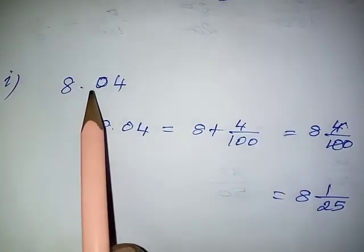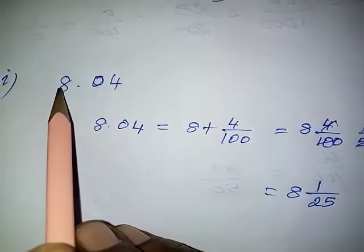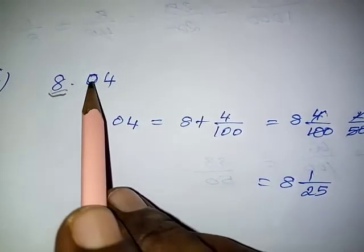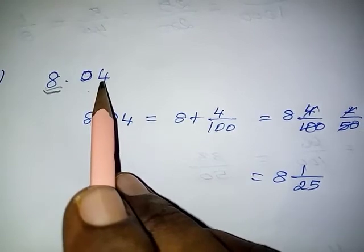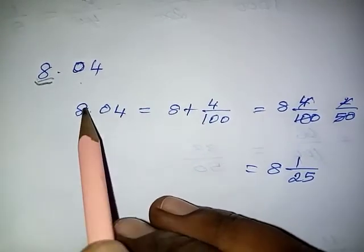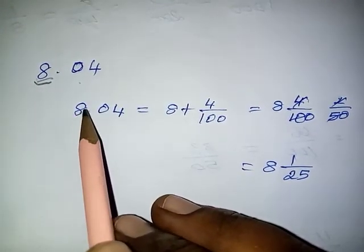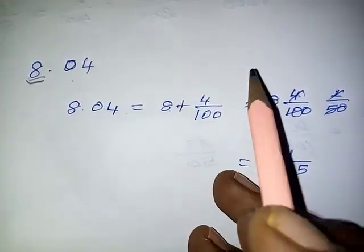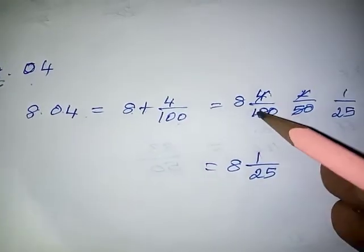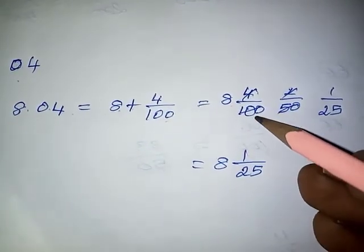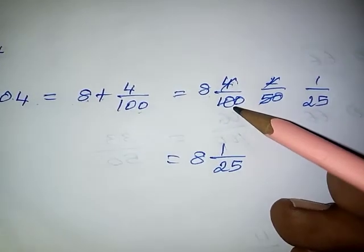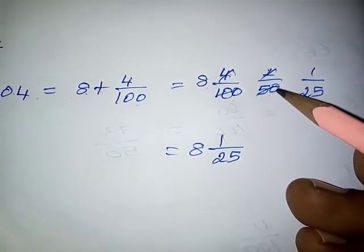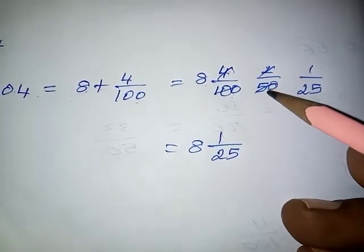Next: 8.04. In this sum, the integral part is 8 and the decimal part — the 10th value is 0, then the 100th value is 4. So the given decimal 8.04 equals 8 plus 4 by 100, giving the fraction 8 and 4 by 100. Here, 4 and 100 can be divided by the 2 times table: 2 twos are 4 and 50 twos are 100, giving 2 by 50.